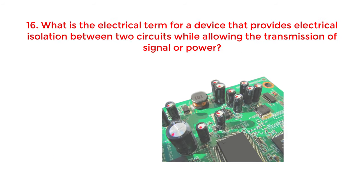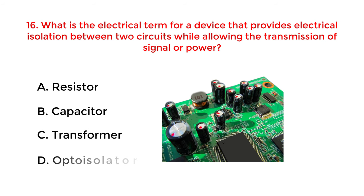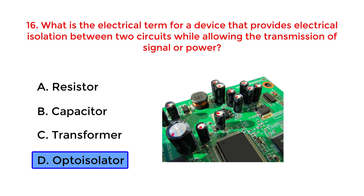What is the electrical term for a device that provides electrical isolation between two circuits while allowing the transmission of signals or power? A. Resistor. B. Capacitor. C. Transformer. D. Optoisolator. The correct answer is option D: Optoisolator.